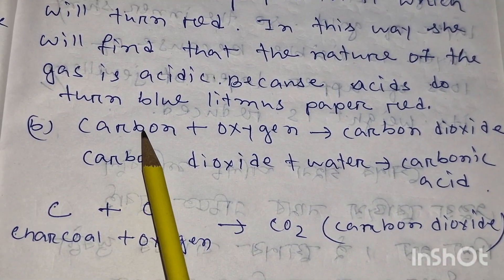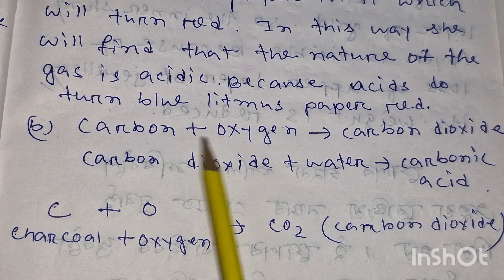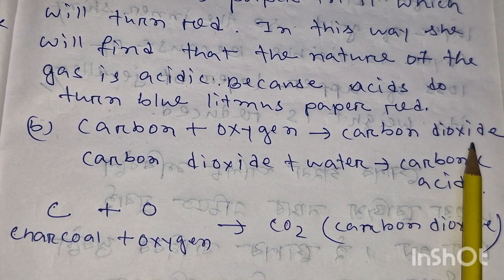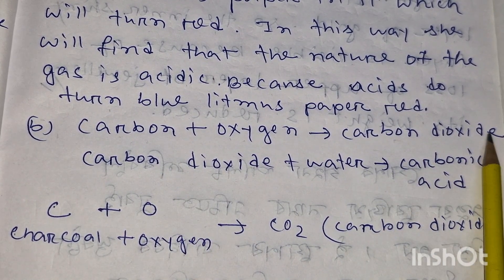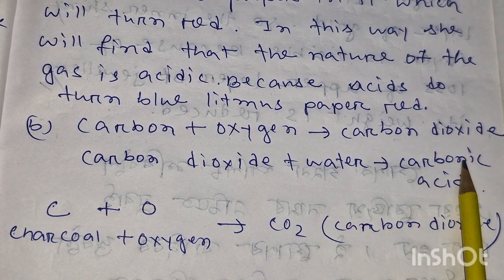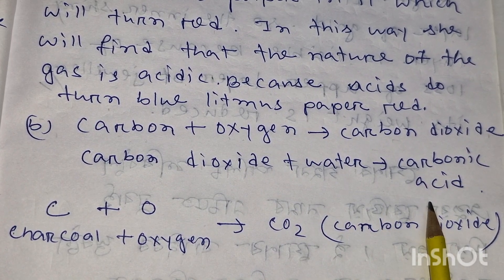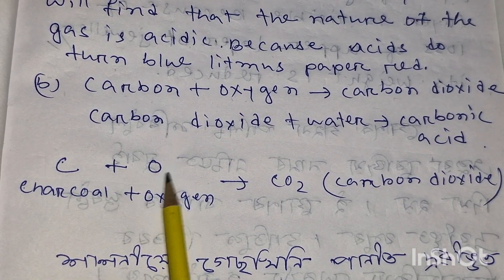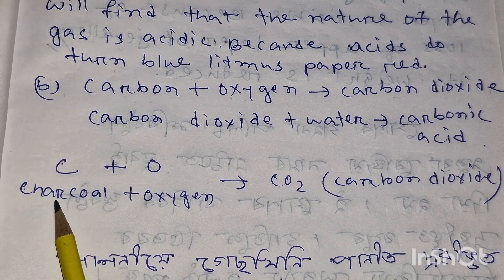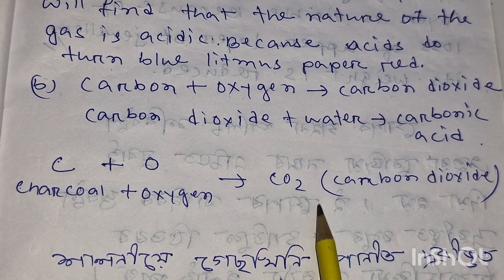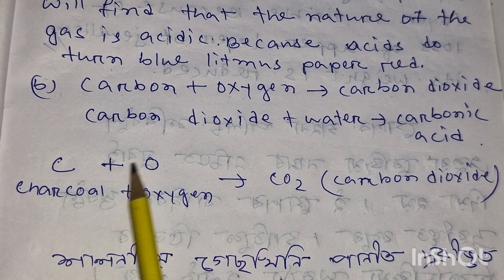Reaction B2: Carbon plus oxygen gives carbon dioxide. Carbon dioxide plus water gives carbonic acid. So when charcoal burns in oxygen, the product is carbon dioxide, which dissolves in water to form carbonic acid.